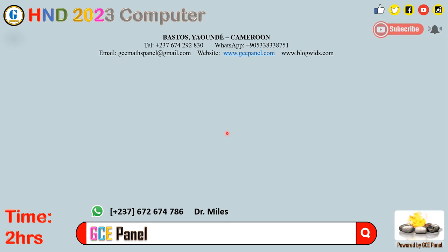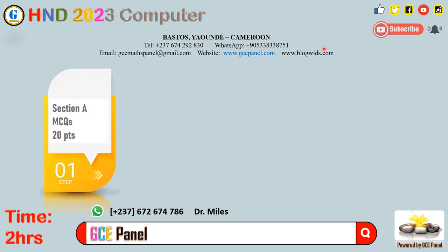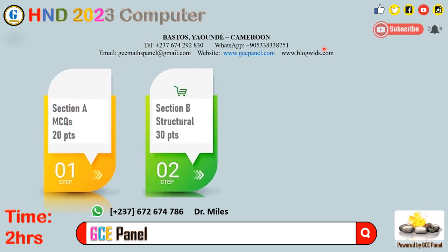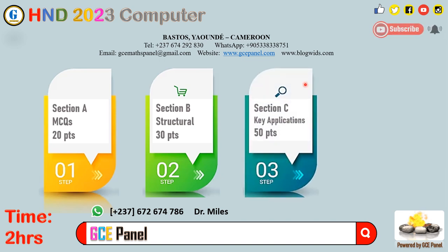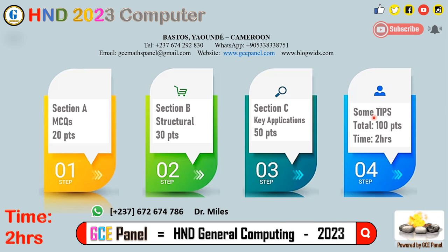This paper is made up of three main parts: Section A with 20 multiple choice questions carrying 20 points; Section B with 11 or 12 structural questions carrying 30 points; and Section C carrying 50 points, which looks at key applications. The total number of points is 100 and the total time is 2 hours.